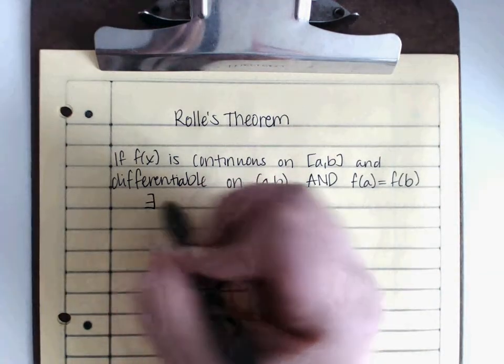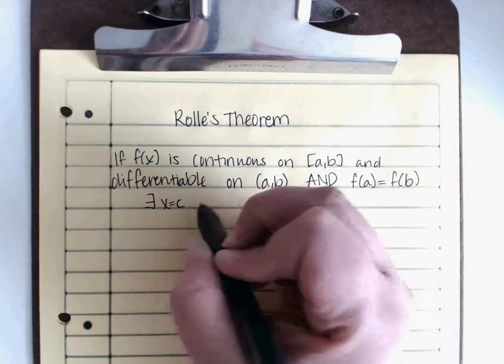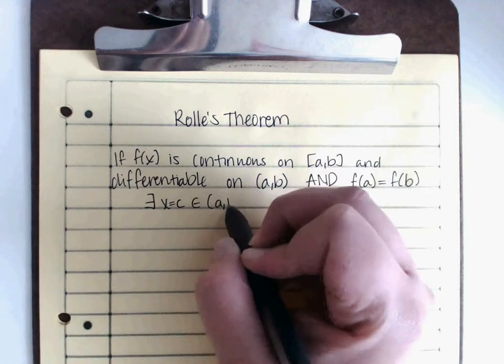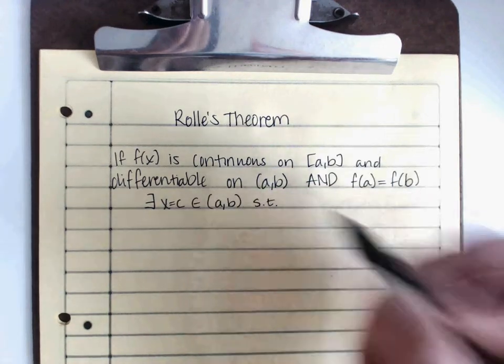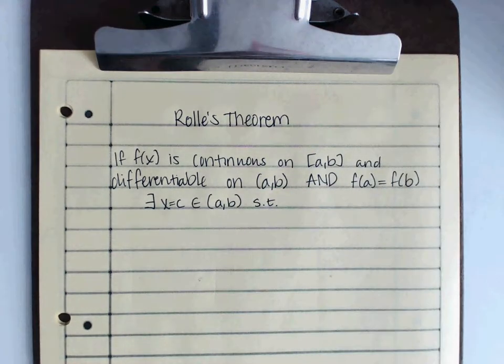There must exist an x equals c within a to b such that... Now, we're going to draw the same three pictures that we did for Mean Value Theorem yesterday, but we're going to talk about how Rolle's Theorem is different.